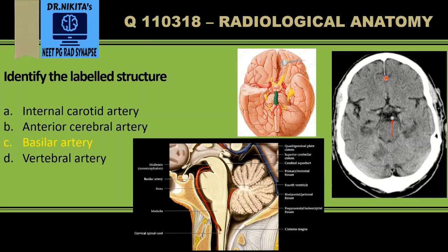So the anterior cerebral artery, middle cerebral artery, and the terminal internal carotid are identified here, this is the basilar artery, and here would be the posterior communicating artery. Therefore, the labeled structure is the basilar artery.